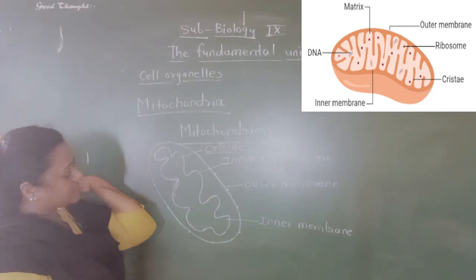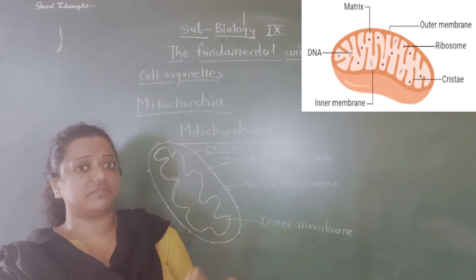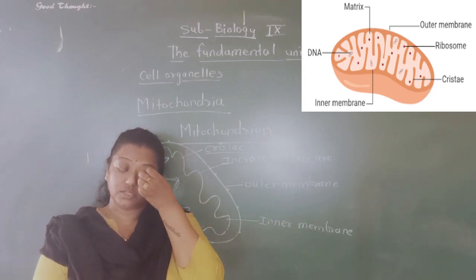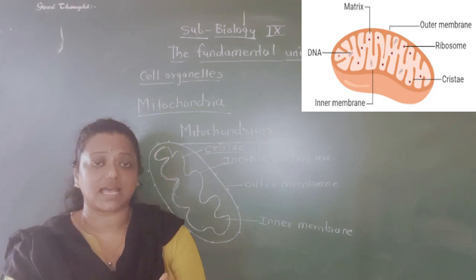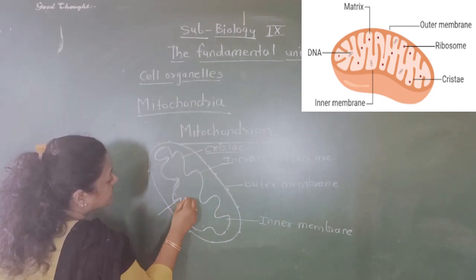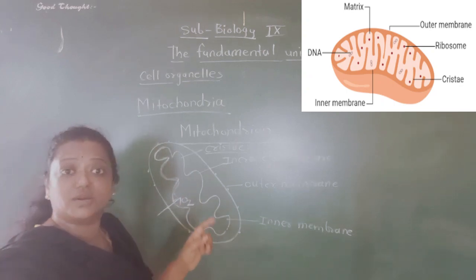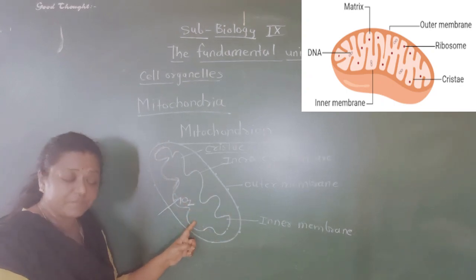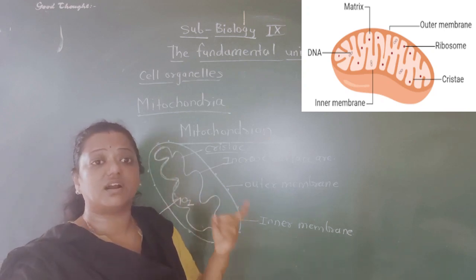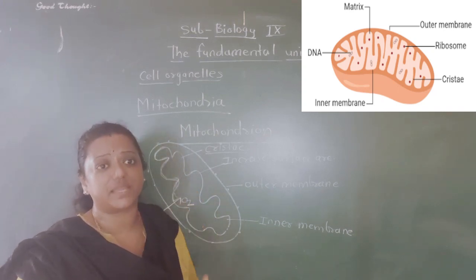This mitochondria is the site where respiration takes place. Whatever food we eat, we convert it into water-soluble nutrients, and those nutrients are broken down in the presence of oxygen. Through the small pores, oxygen enters inside for the breaking down of food material — this process is called respiration, and it gives us energy.